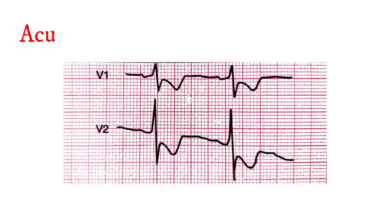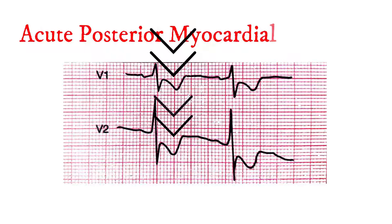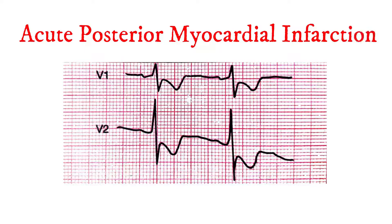Conventional ECG leads do not face the posterior aspect of the heart. As a result, typical ST segment changes are not seen. In the anterior chest leads V1 to V3, ST segment depression and tall R waves are observed.